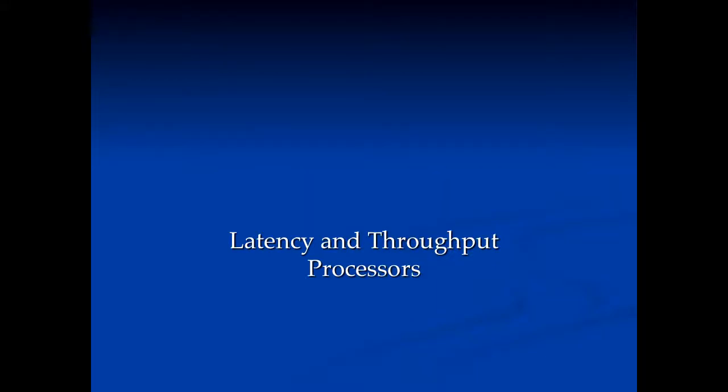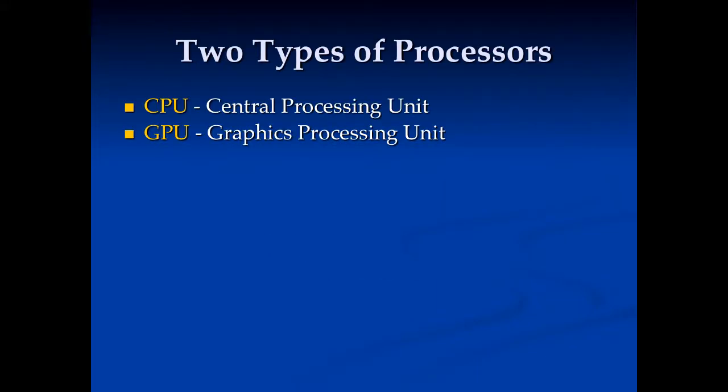Let's take a look at how latency and throughput processors differ. There are two types of processors we're going to talk about today: CPUs, or central processing units - the regular processors in a computer - and GPUs, or graphics processing units, the processors that typically handle 3D graphics on the screen.